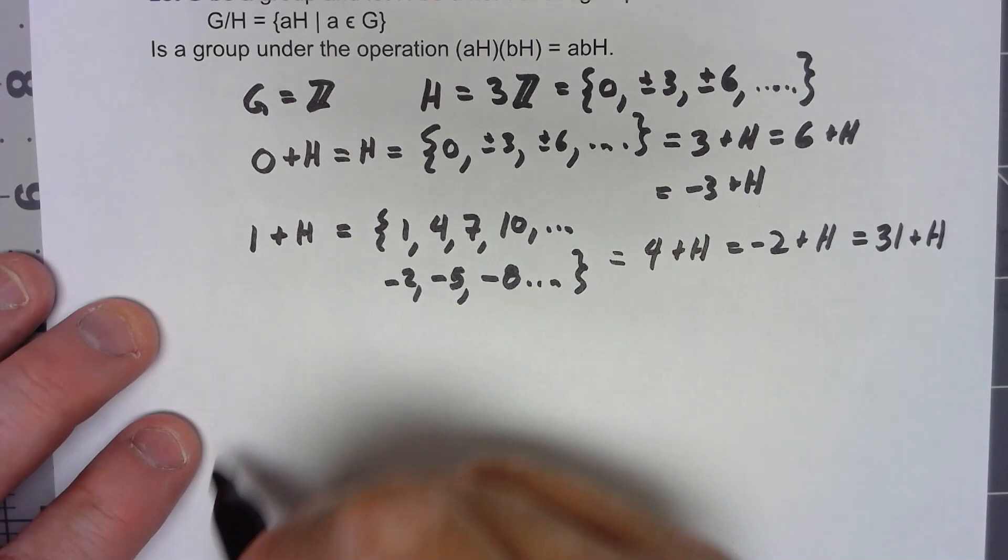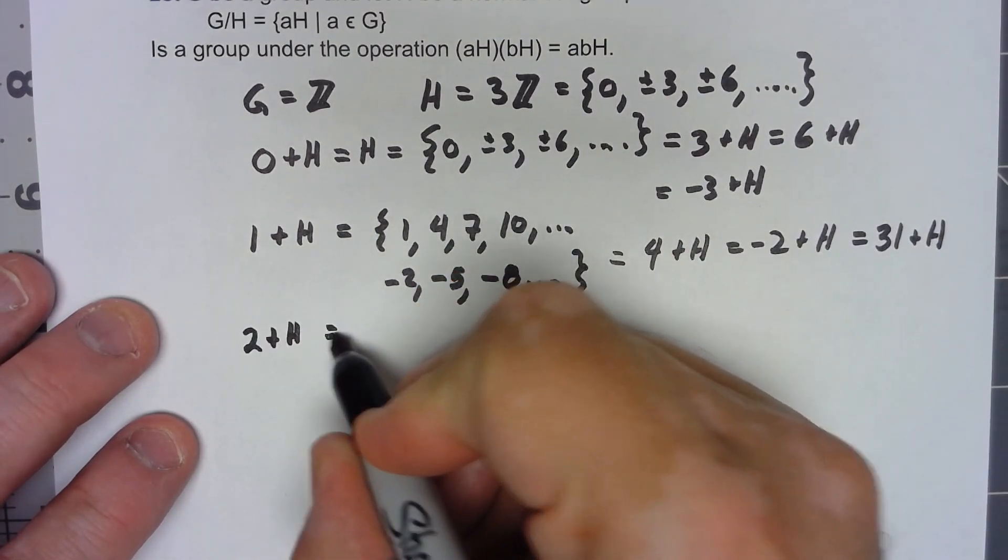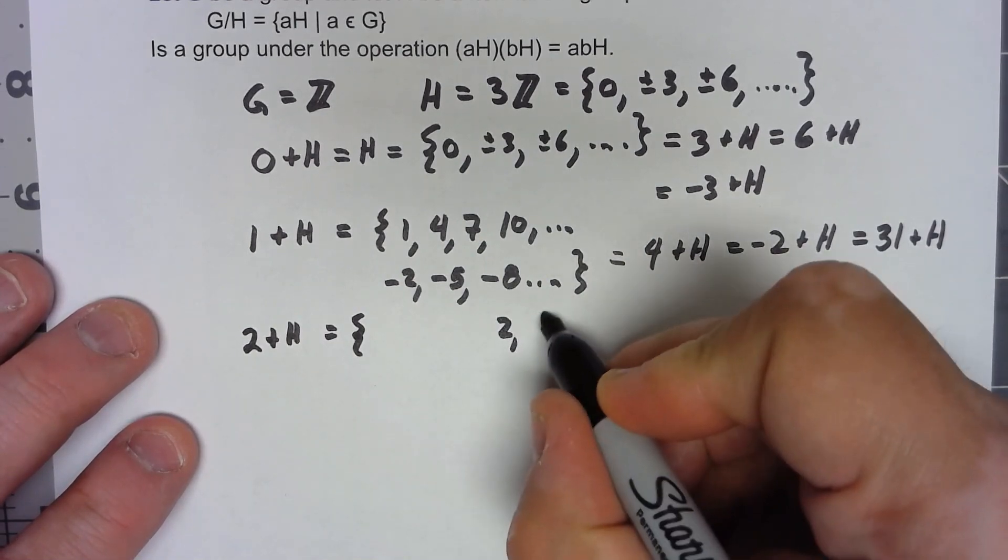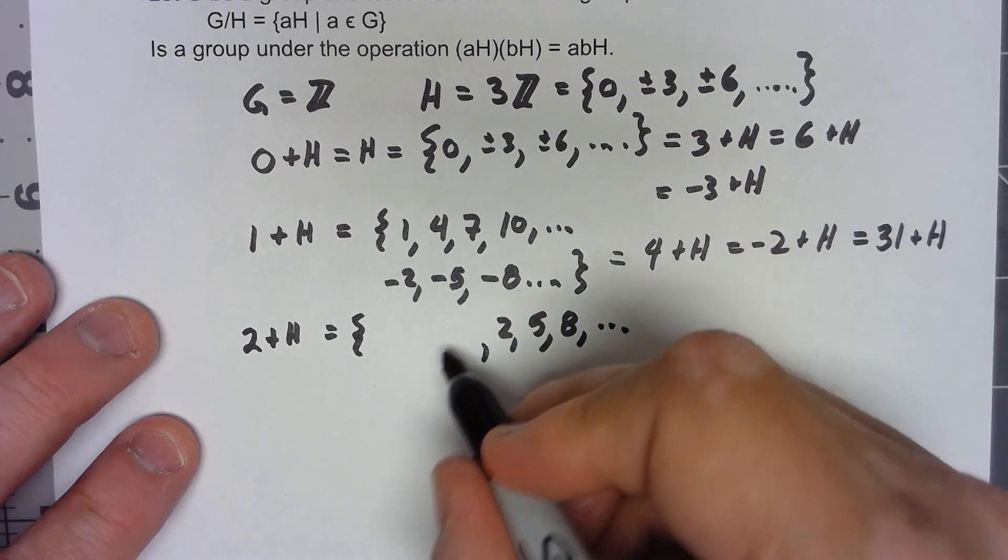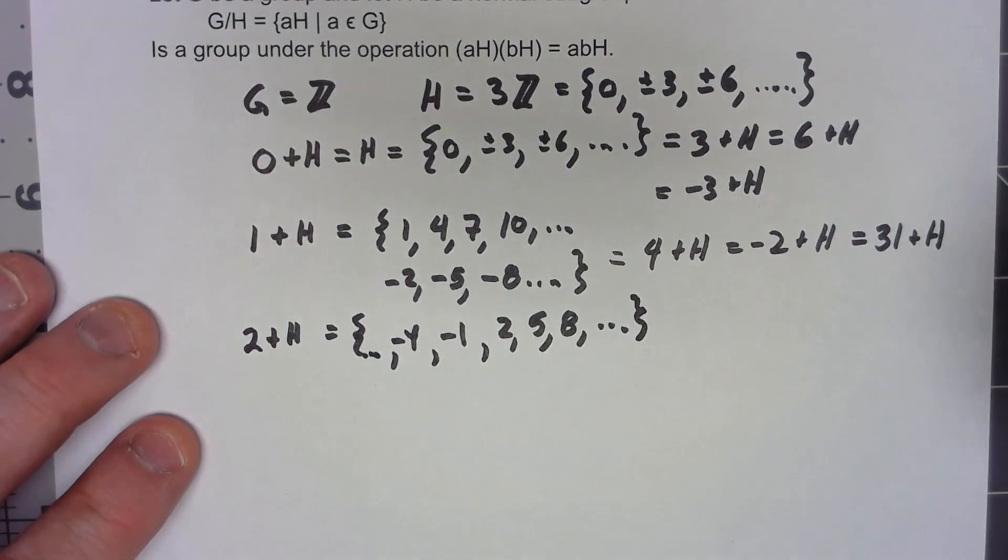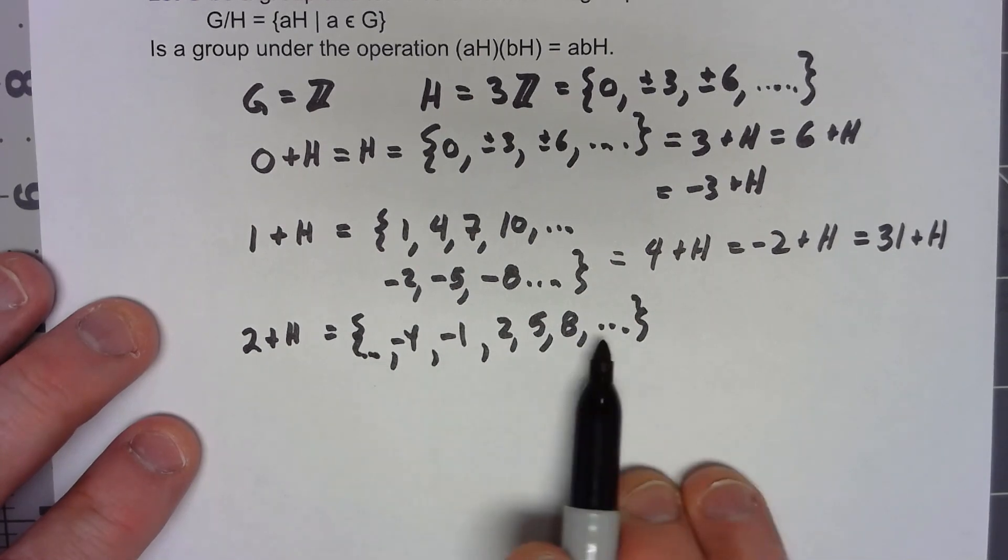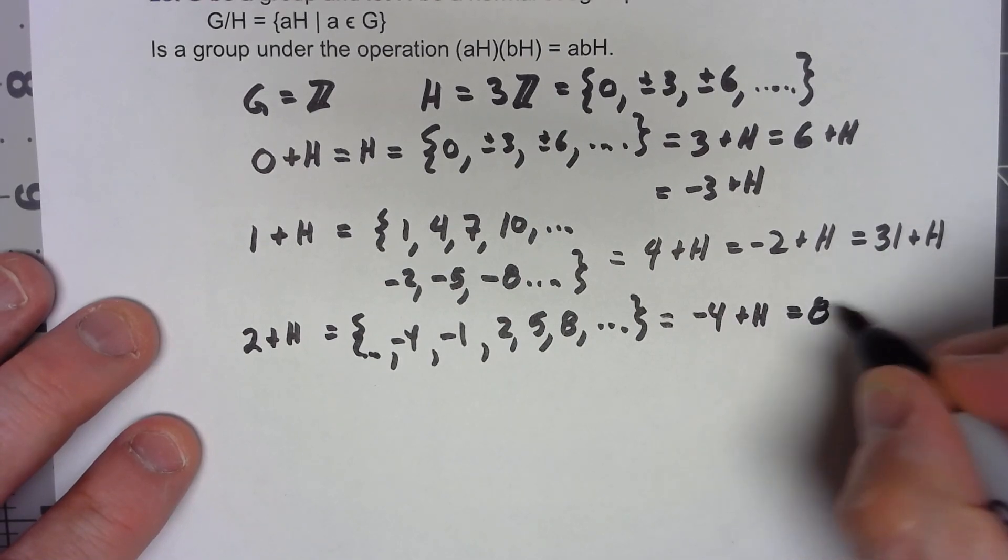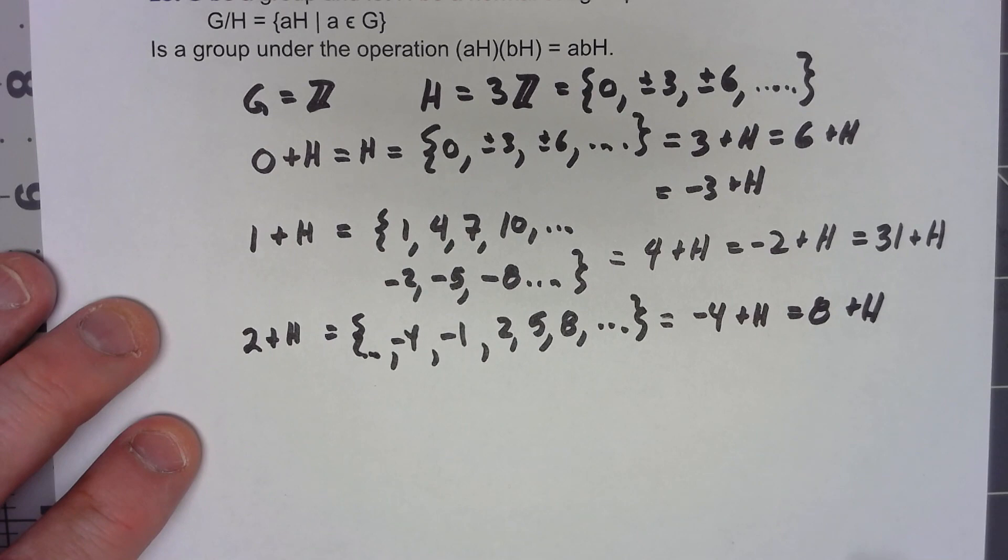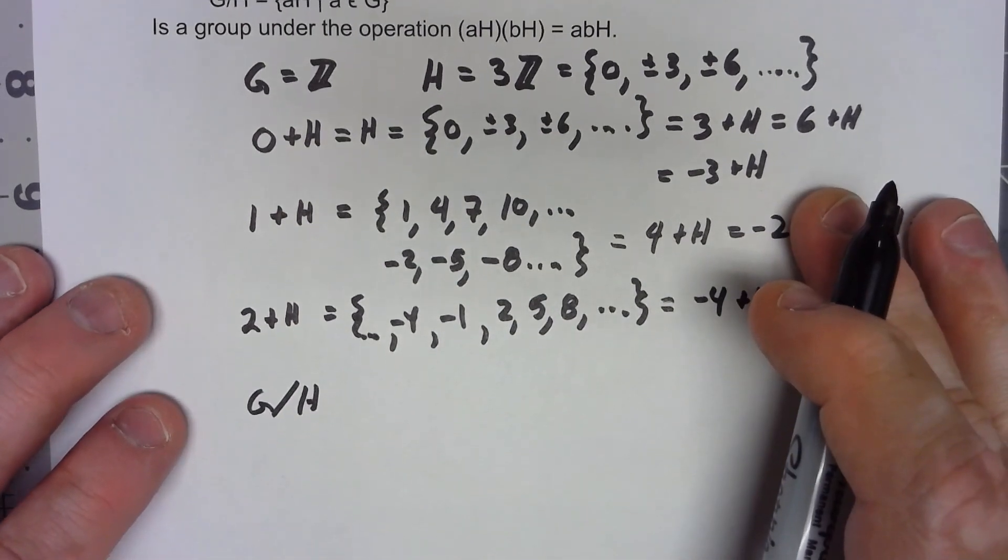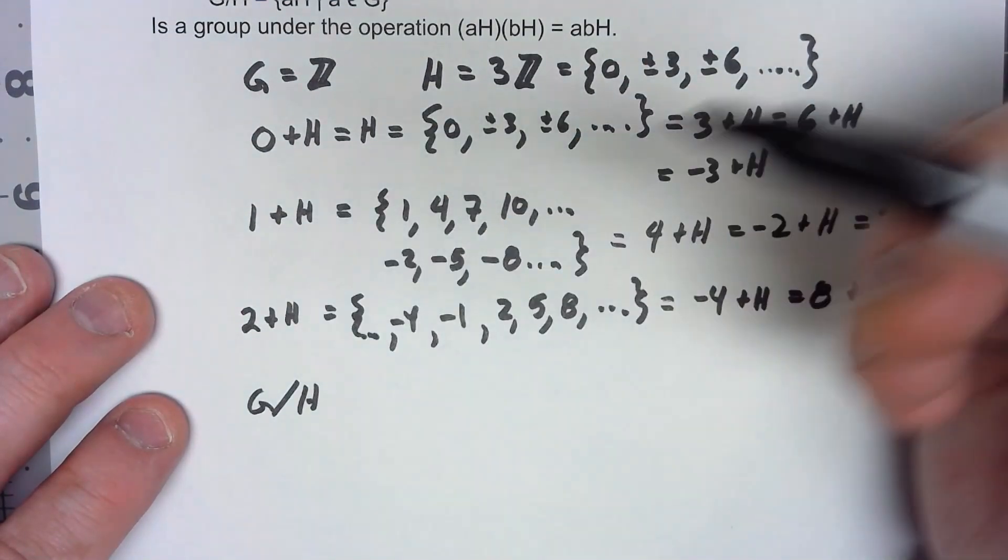There's only one more coset: 2+H would be 2, 5, 8, and so on like that. I'd also have -1, -4, and on like that. And again, if I add any element in here to H, I get the same thing. This is -4+H, this is equal to 8+H. Because these are all the same thing, we can say that this G/H only has 3 elements: 0+H, 1+H, 2+H.